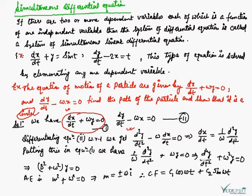So first, we will differentiate the second equation with respect to t to find the value of dx/dt. We get d²y/dt² - ω(dx/dt) = 0, from which we have dx/dt = (1/ω)(d²y/dt²).